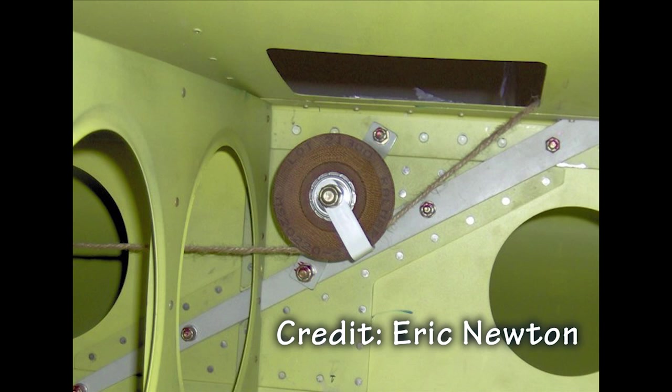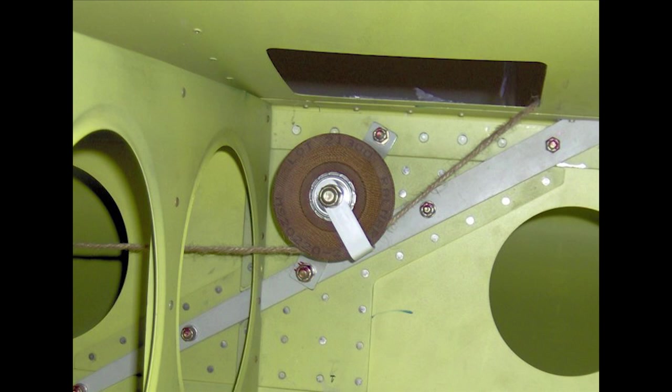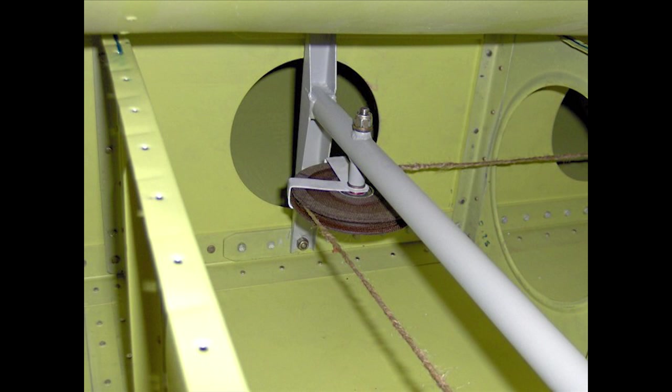Here are some pictures from Eric Newton who built a Bearhawk Patrol homebuilt aircraft using pulley guards that he fabricated. Note that the cable cannot fall far from its groove as it is retained by this metal strip we call a pulley guard or cable guard. This picture shows using two guards as the cable makes a more drastic turn and needs further protection.